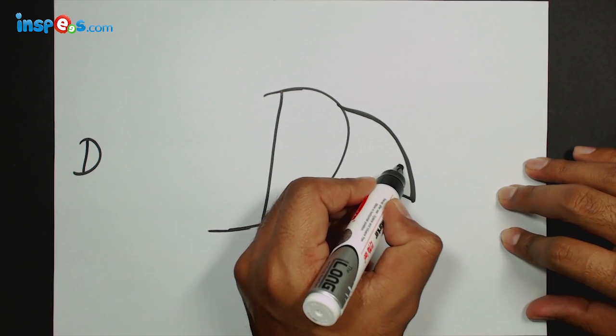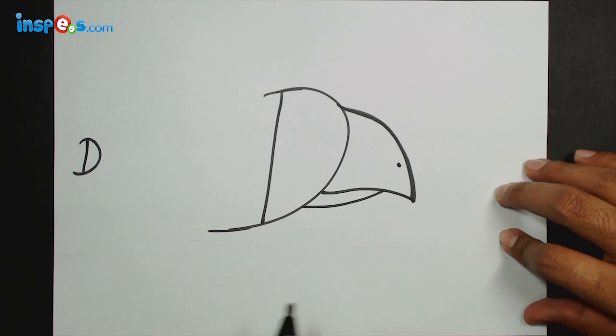Now we need a dot here. Yep. And now it's time for our eyes. I'm going to make a circle for our eyes and an eyeball here.